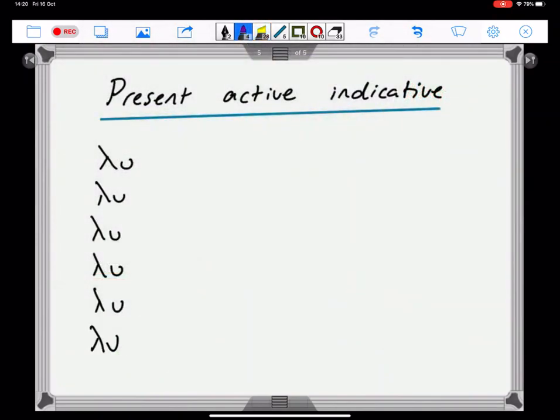So, to summarize, your endings. Luo, lueis, luei, luomen, lueta, luousen. This is what we call the present, active, indicative.